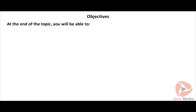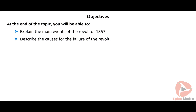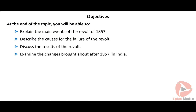At the end of the topic you will be able to: explain the main events of the revolt of 1857, describe the causes for the failure of the revolt, discuss the results of the revolt, and examine the changes brought about after 1857 in India.